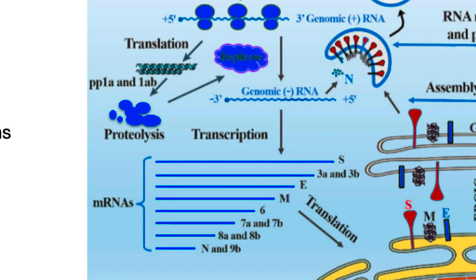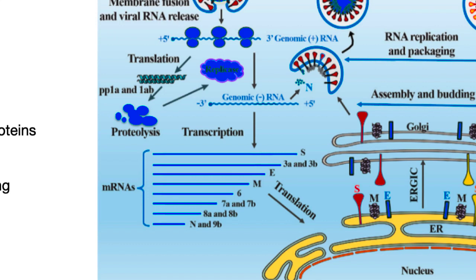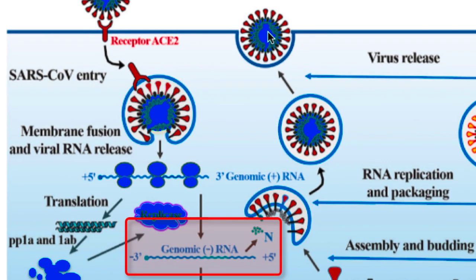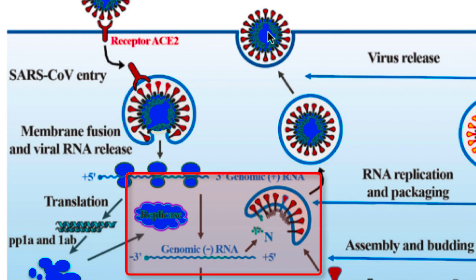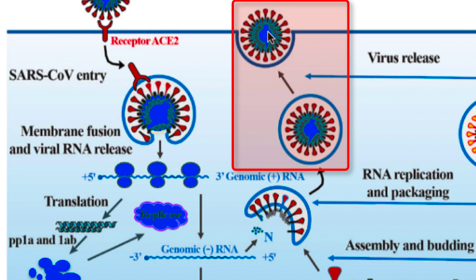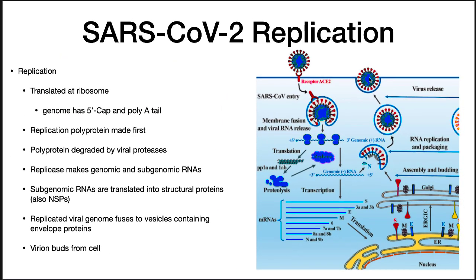Because of this it is recognized by the ribosome and translated into a large polyprotein. The polyprotein is degraded by viral proteases into the replication enzyme and other non-structural proteins, or NSPs. The replicase makes subgenomic and genomic RNA. The subgenomic RNA serves as mRNAs for various other proteins. The structural proteins are translated at the endoplasmic reticulum and are glycosylated at the Golgi apparatus. The fully formed virion then exits the cell by exocytosis.